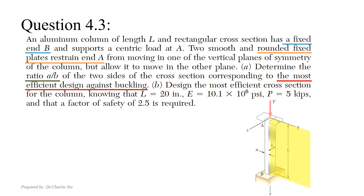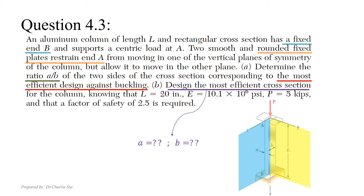There are two planes to consider: the XY plane and the XZ plane. Furthermore, for this question we need to design the most efficient cross-section for the column, which means for part B we need to identify the values for a and b.